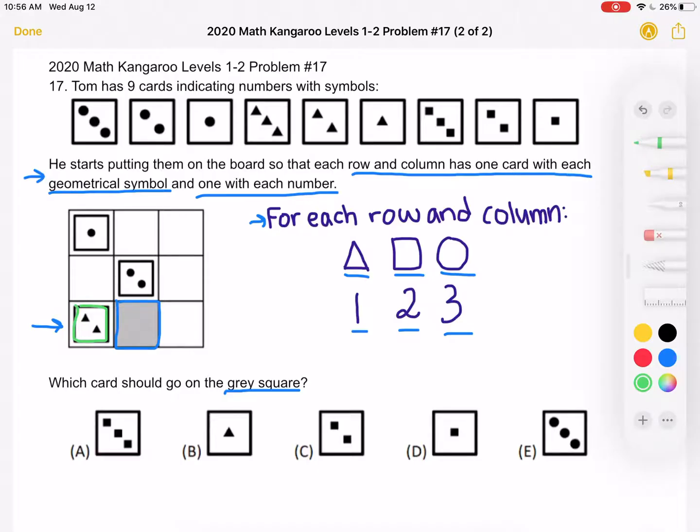So again, looking at our requirements for each row and column, we can see that we've already placed our triangle, and we've already used the number two because we have two triangles.